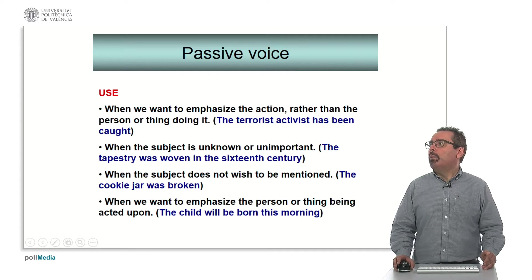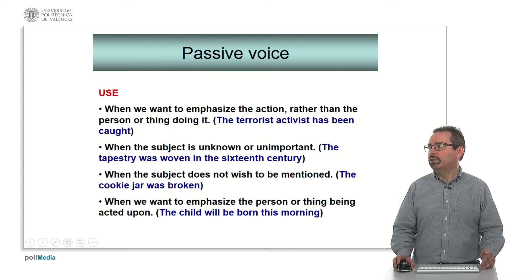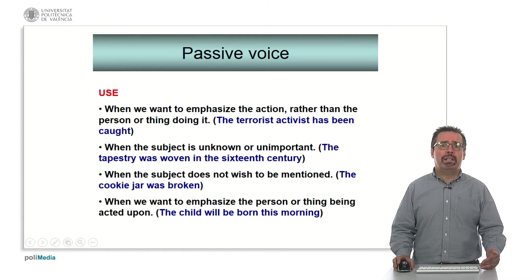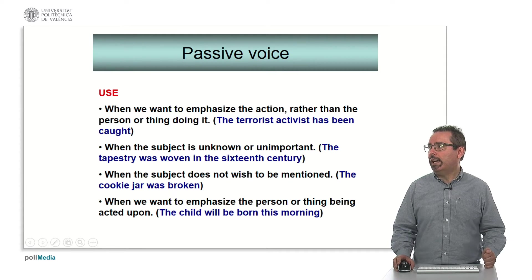The third use is when the subject does not wish to be mentioned for any reason. 'The cookie jar was broken' — it was not relevant to include the person who carried out the action. And also, we use the passive voice when we want to emphasize the person or thing being acted upon — this is another way of focusing on the action, but from the point of view of the person. For example: 'The child will be born this morning.'